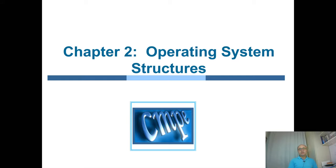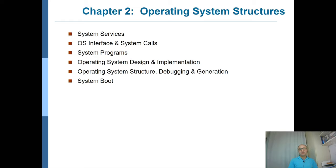In this chapter, we are going to discuss operating system structures. We will first talk about system services, and then the interface to the services through the system calls. We will also talk about systems programs, design and implementation issues of operating systems, as well as structure, debugging, and generation. We will also talk about how a computer system boots.